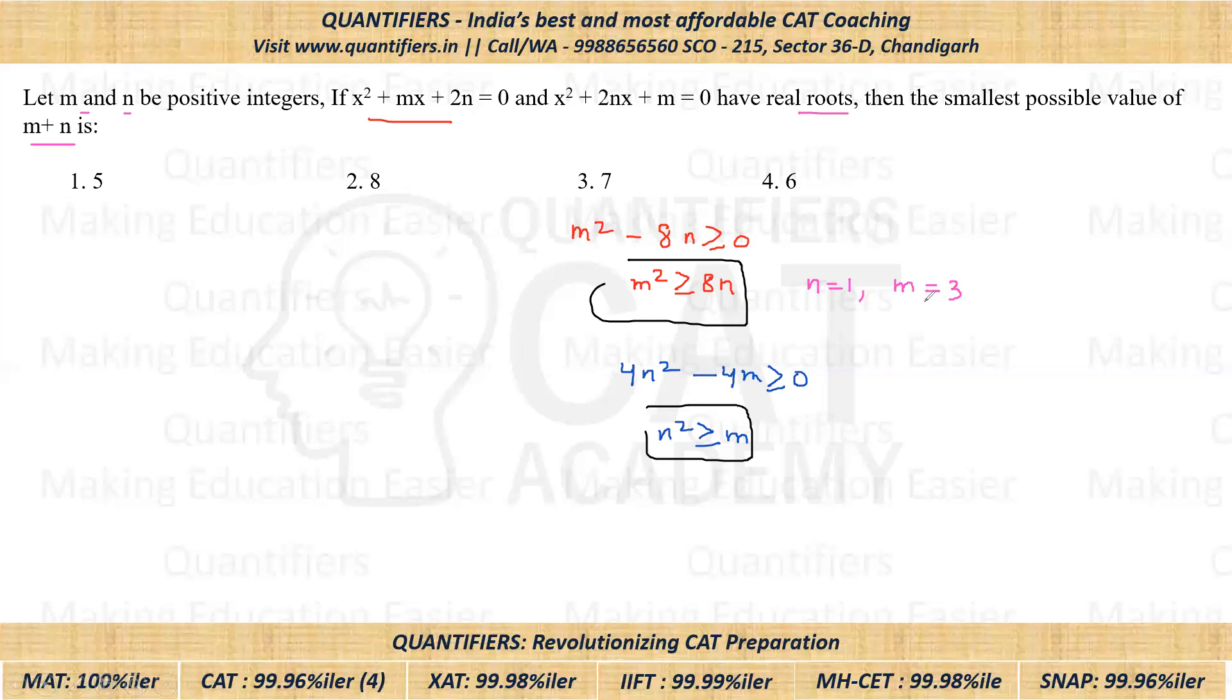So students, if I put N equals 1, M equals 3, but will it satisfy this equation? If I put N as 1, I'll get 1², that is 1 greater than or equal to M. M's value is 3. Is it satisfying? No, it is not satisfying. So that means N equals 1 is not going to work.